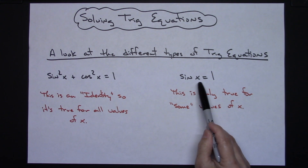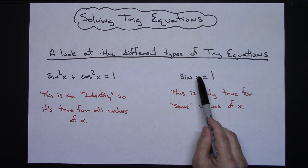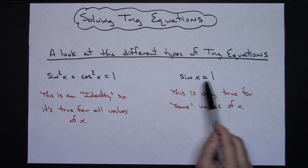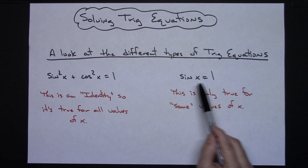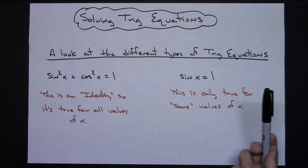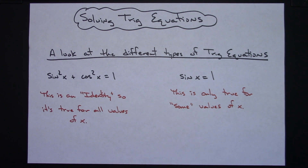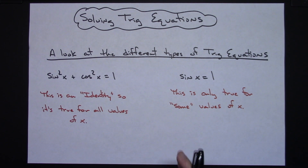But if you have something like sine x equals 1, that's not an identity — it's not one we already know. We have to figure out what value of x makes that true. Only some values will make a trig equation true, and that's what we're solving: this type of conditional trig equation.